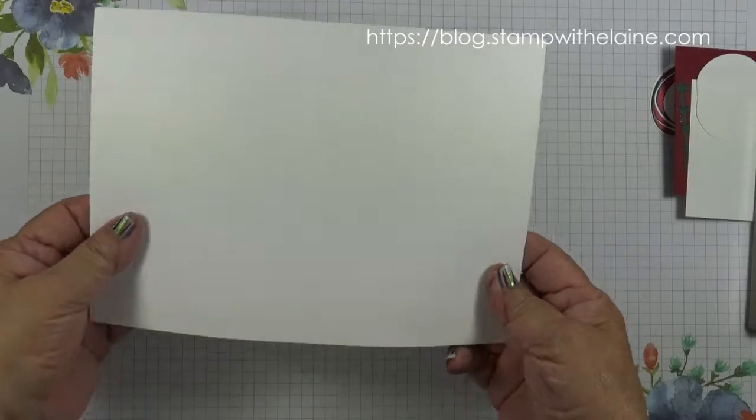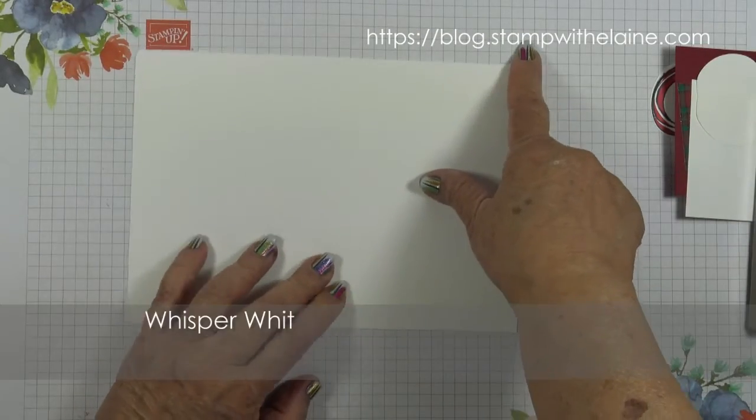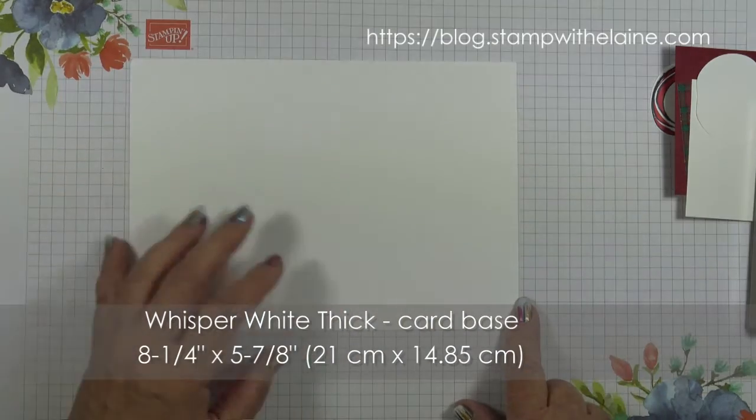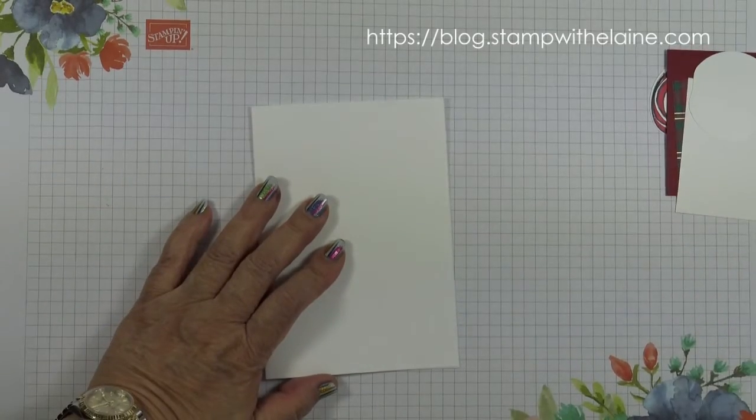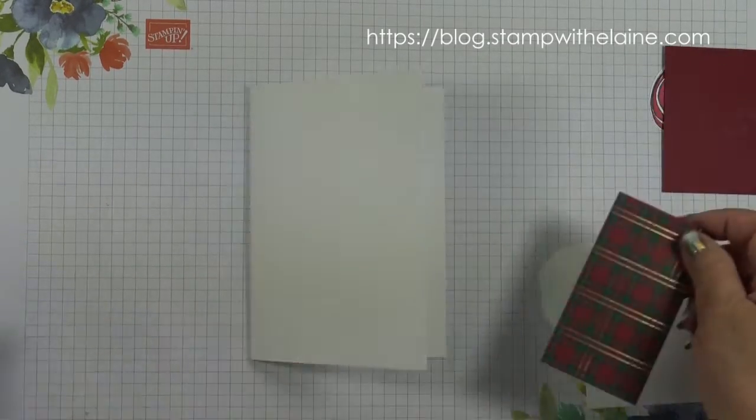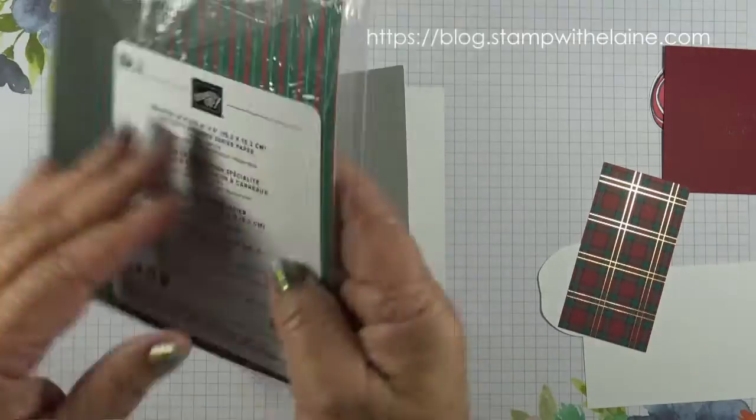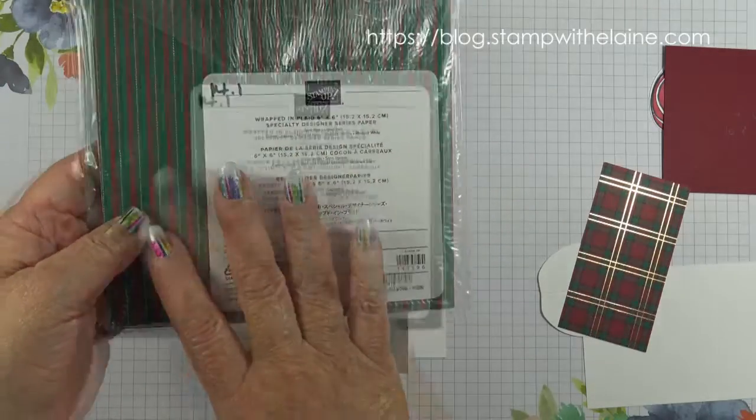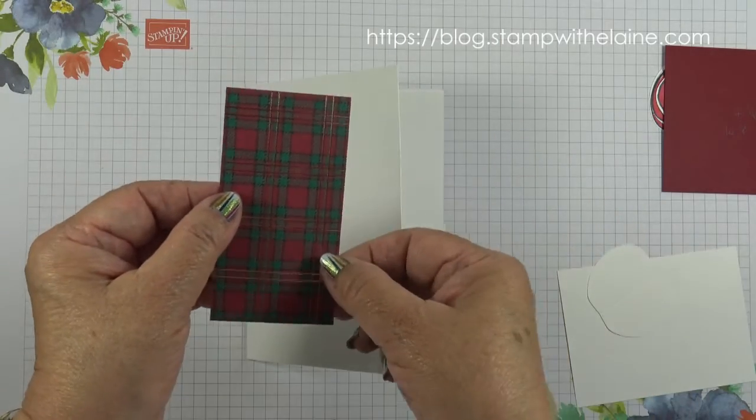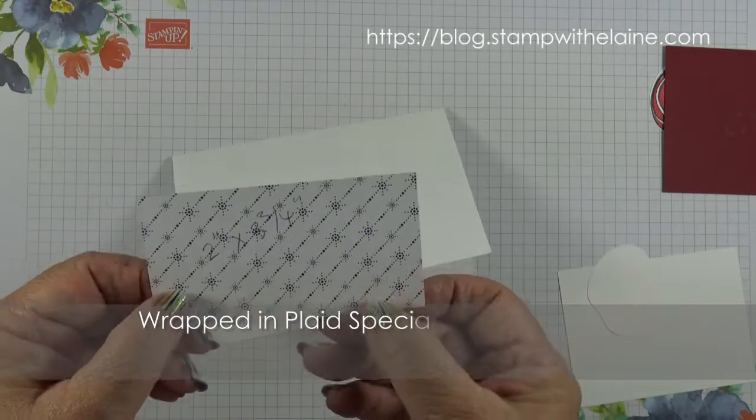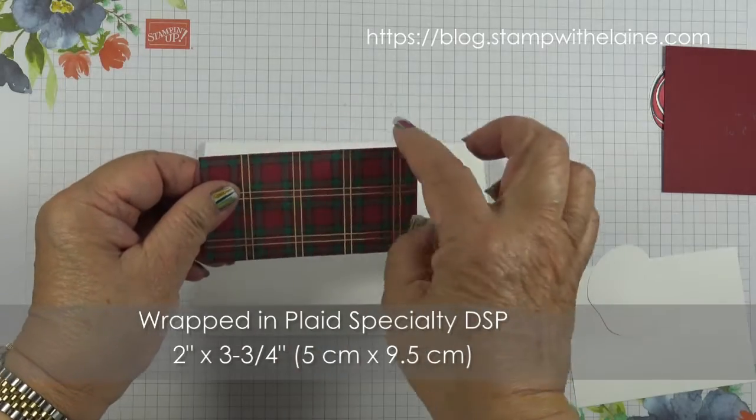The card base is half an A4 sheet. This is whisper white thick and in Europe this measures eight and a quarter inches by five and seven eighths. That's 21 centimeters by 14.85 centimeters and then folded in half. I'm using the wrapped in plaid designer series paper. These come in a six by six format and on one side it's just with Christmassy themes or stripes and on the other side it's all this tartan with gold or copper flecks through it. This piece measures two inches by three and three quarter inches in metric that will be five centimeters by nine point five centimeters.